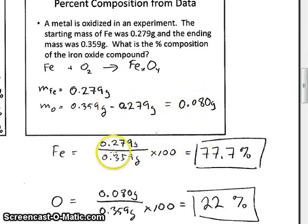To determine the percent from iron, we would take the mass of the part, the iron, 0.279 grams, divided by the mass of the whole, 0.359, multiplied by 100, to calculate 77.7%. Please note here we can calculate this to three significant figures.